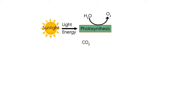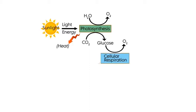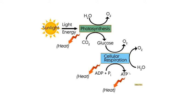Photosynthesis and respiration are the primary pathways of carbon and energy metabolism in plants. Photosynthesis uses light energy, carbon dioxide and water to drive the synthesis of carbohydrates and release of oxygen. Respiration then uses these carbohydrates to support growth and maintenance through the provision of carbon intermediates, reducing equivalents and ATP. These processes in turn release carbon dioxide and convert oxygen back to water.